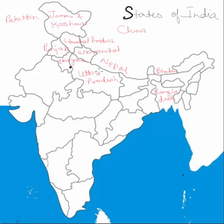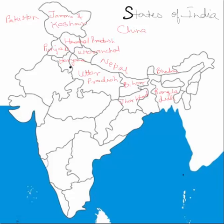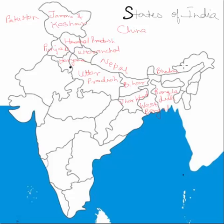Uttar Pradesh is also the most populous state in the country. To its east is Bihar, which borders it almost completely on the eastern side. To the south of Bihar is Jharkhand, which covers the entire southern boundary of Bihar — it was separated when the old Bihar state was split. To the east of Bihar and Jharkhand is West Bengal, a thin and elongated state that also has Bangladesh to its east.